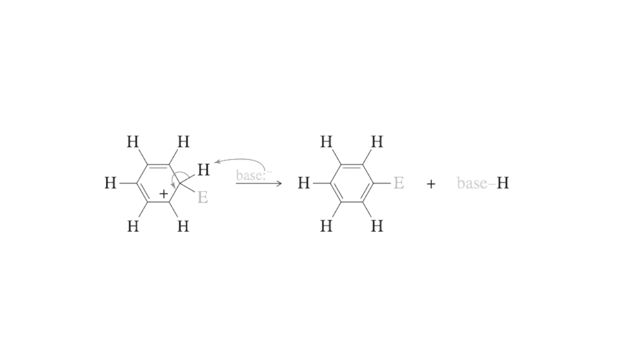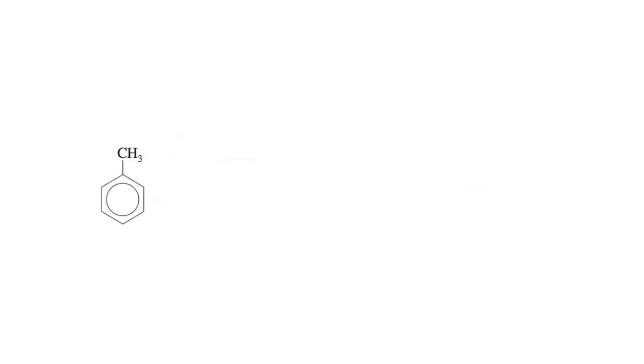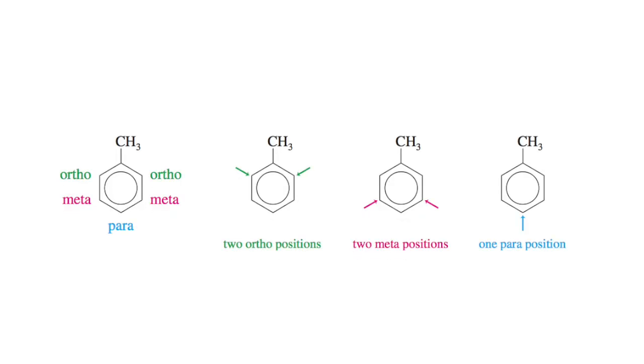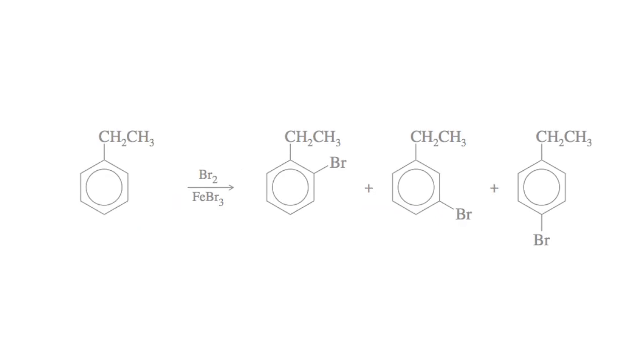Now if we start off with an aromatic ring that already has a substituent on it, like this toluene, we have three different options for where we can add our electrophile. The first is ortho, the second is meta, the third is para. The amount that you get of each of these actually depends more on the substituent you started off with on the aromatic ring than it does about the electrophile that you actually used.